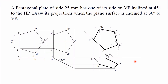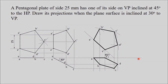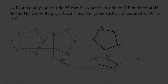Join these points in sequence — A to B, B to C, C to D, D to E, and E to A. This is the required final top view. You can see that side AE is on VP because A appears on the XY line, and the plane is inclined at 45 degrees. The entire plane makes an angle of 30 degrees to VP. This is how you draw the front view and top view of an oblique plane. Thank you for watching.